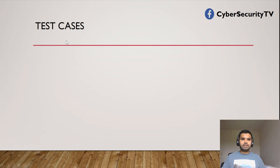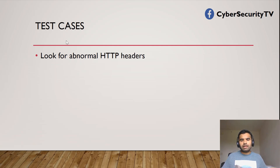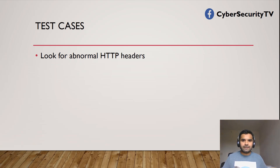Next, let's look at the test cases. With APIs there are thousands of different attack vectors, and most web vulnerabilities are applicable to APIs too — like subdomain takeover and cross-site request forgery. But many are specific to the OWASP API Top 10. One thing you want to check is abnormal HTTP headers, since APIs use header-based parameters and authentication is also passed in the header rather than cookies.